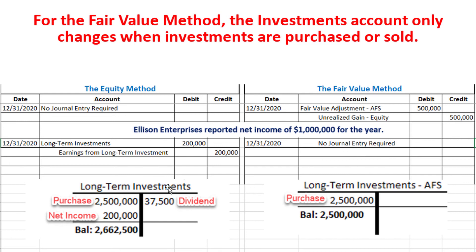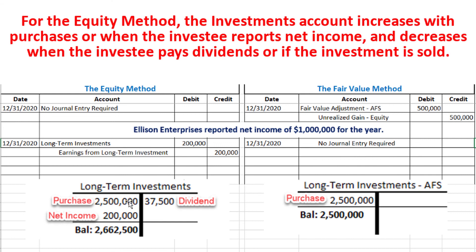For the equity method, the long-term investments account increases whenever there is a purchase of shares or when the corporation you've invested in has net income, and it decreases when there are dividends or a sale. A net loss instead of net income would decrease the investment account by crediting it. For the fair value method the ending balance was 2.5 million dollars, while for the equity method it was 2,662,500 dollars.